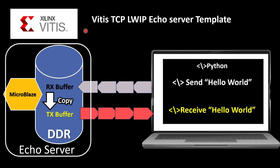The Xilinx Vitis IDE comes with a TCP lwIP echo server template, so we don't need to do anything — we just use that template and it will run the echo server in our embedded system on our FPGA or evaluation board. The echo server simply receives the data, copies it to the TX buffer, and sends it back to the host machine.